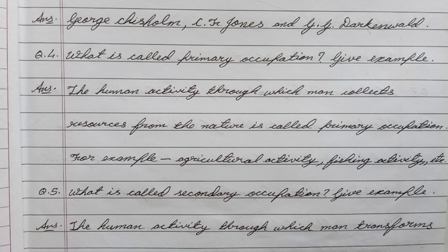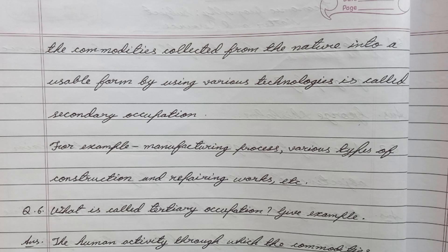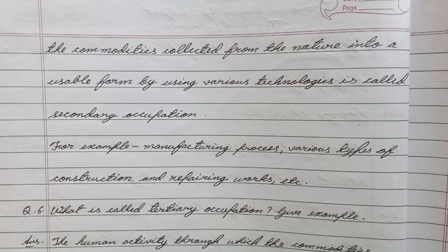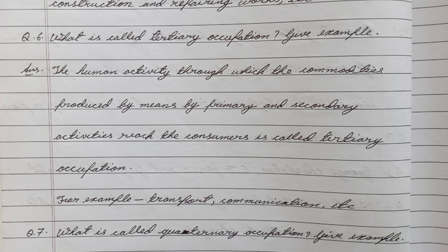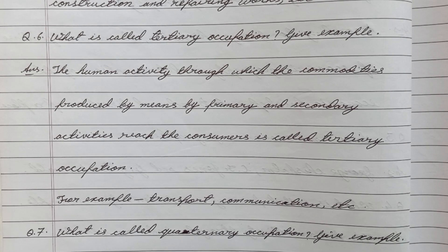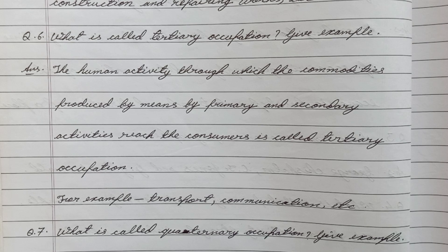Question number five: What is called secondary occupation? Give an example. Answer: The human activity through which man transforms the commodities collected from nature into a usable form by using various technologies is called secondary occupation. For example, manufacturing processes, various types of construction and repairing works, etc.